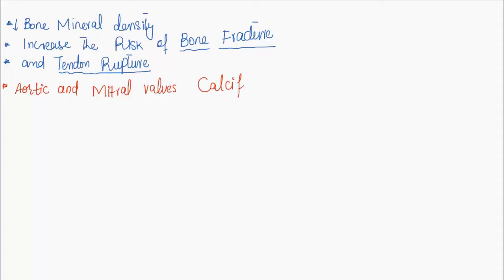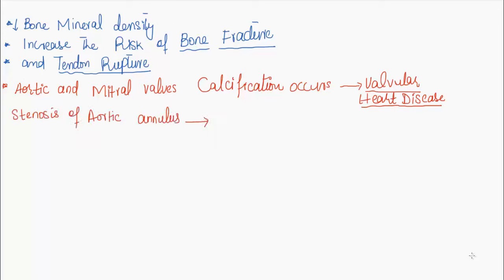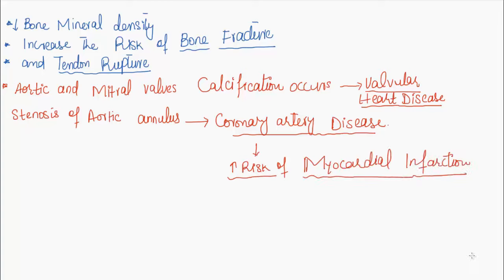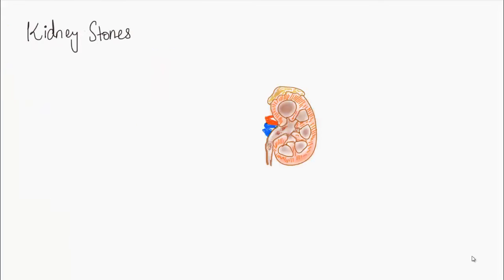Aortic and mitral valve calcification occurs, which leads to valvular heart disease. Stenosis of the aortic annulus leads to coronary artery disease. It increases the risk of myocardial infarction in later ages. Hearing loss affects 40% of people.